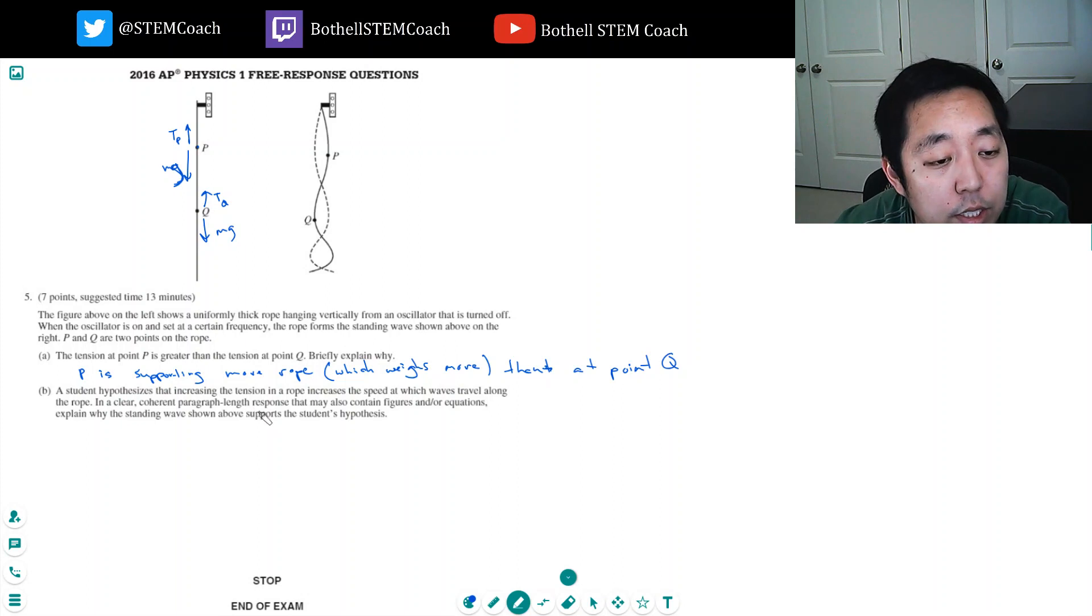Student hypothesizes that increasing the tension on the rope increases the speed at which a wave travels along the rope. In a clear, coherent paragraph length response, my favorite, that may also contain figures and/or equations, explain why the standing wave shown above supports the student hypothesis.